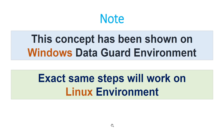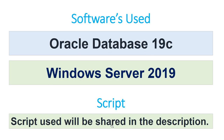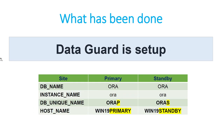It doesn't matter whether you are doing this on Windows or Linux — the same steps work interchangeably. I have used Oracle Database 19c and Windows Server 2019, and the scripts used in this tutorial will be shared in the description. Data Guard has already been set up. My configuration is: AURAP is primary, hosted on WIN19PRIMARY, and AURAS, hosted on WIN19STANDBY, is the standby.